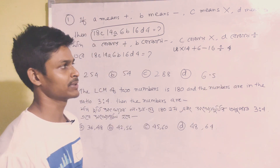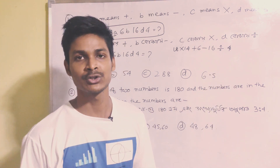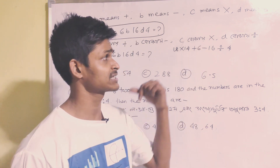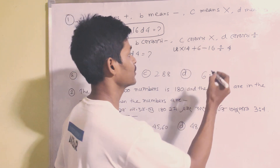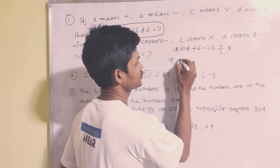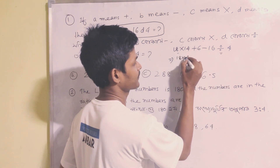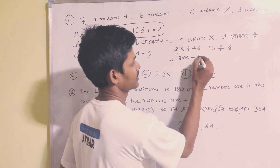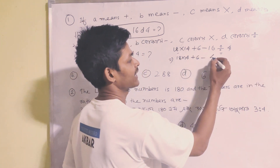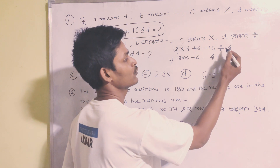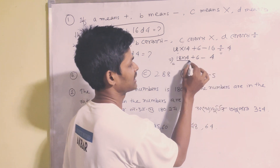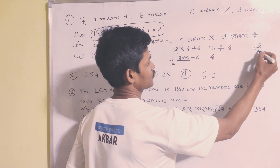Now we follow the BODMAS rule. First we divide: 16 divide by 4 equals 4. Next we multiply: 18 multiply 14.